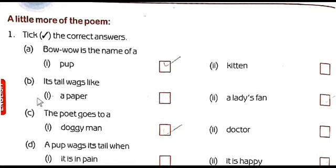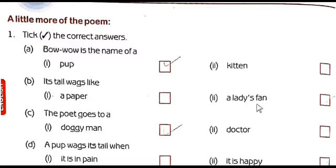Now the second question, B: 'Its tail wags like...' — meaning the pup's tail. How does the pup wag its tail? Does it wag its tail like a paper, or like a lady's fan? The correct answer is option 2, a lady's fan. Bow-wow is a pup and its tail wags like a lady's fan. Option 2 is the right answer.